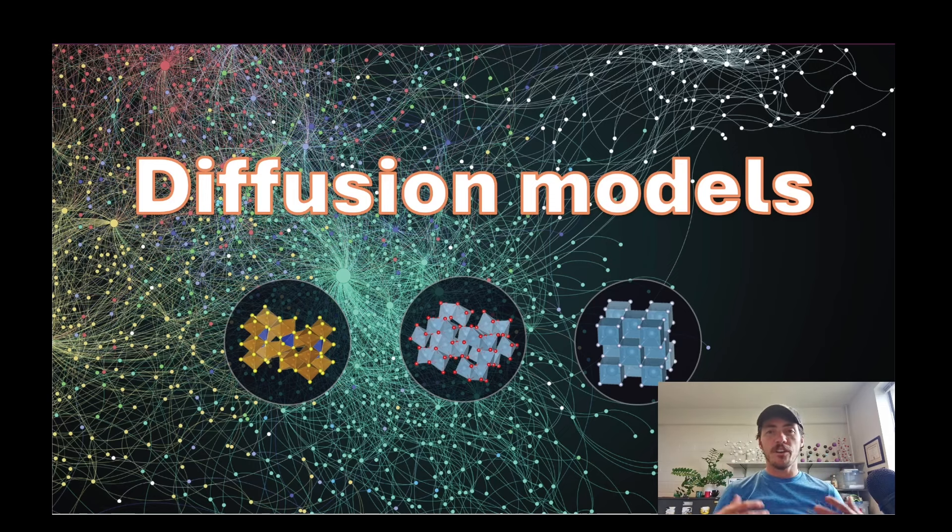Now, diffusion models are the current state-of-the-art, in my opinion, in terms of generative models. They are incredible. They are typically outperforming GANs and VAEs and other approaches. So how do they work? Let's dive into it.